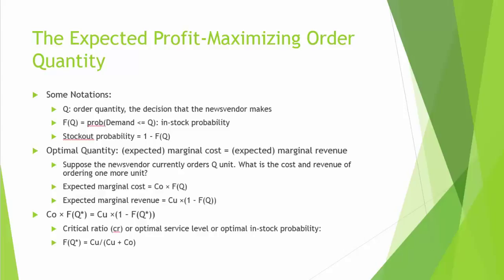Suppose F(Q*) is, say, 70%. Then the optimal order quantity is to make sure that demand will be met 70% of the time. Another interpretation is that when a customer drops by, he or she will have a 70% chance to find the newspaper available.